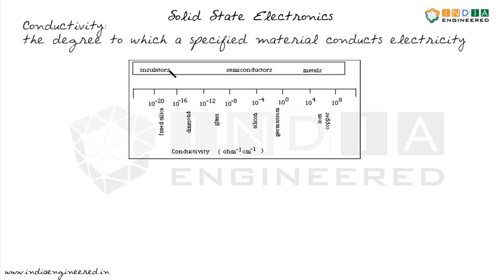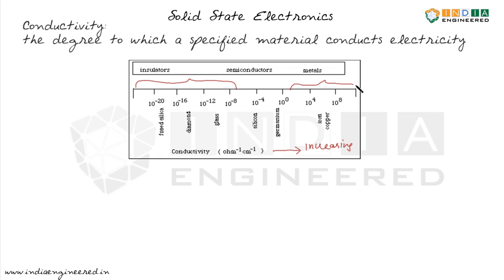Now let's compare the conductivity of different materials. Along this direction we have increasing value of conductivity. Insulators have low conductivity, metals have high conductivity, and semiconductors have conductivity between these two.